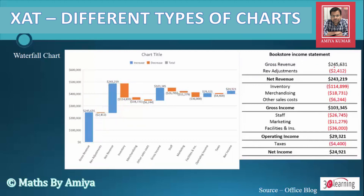We start with gross revenue, then adjust it — first increasing, then decreasing the value — to arrive at net revenue. When net revenue is adjusted by inventory, merchandising, and other sales, we get gross income. So the blue bars represent actual values and the saffron bars represent adjustments or negative values.